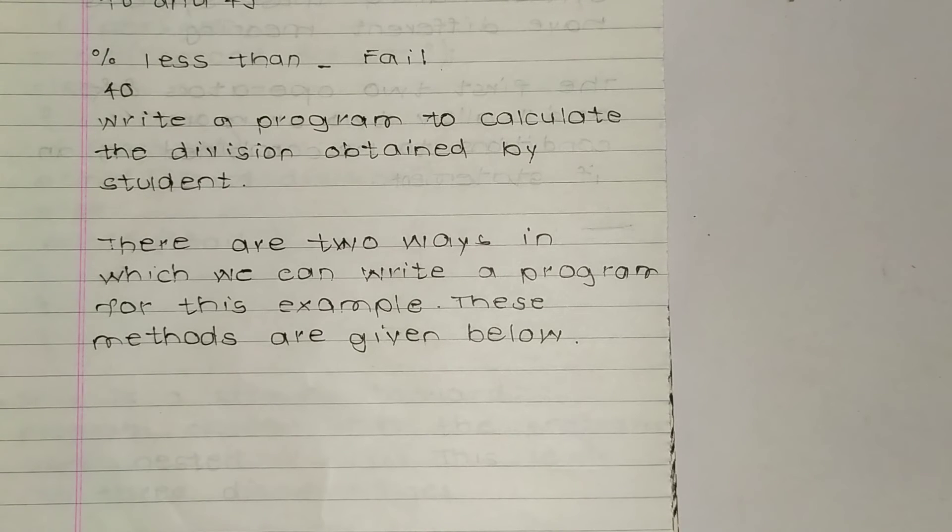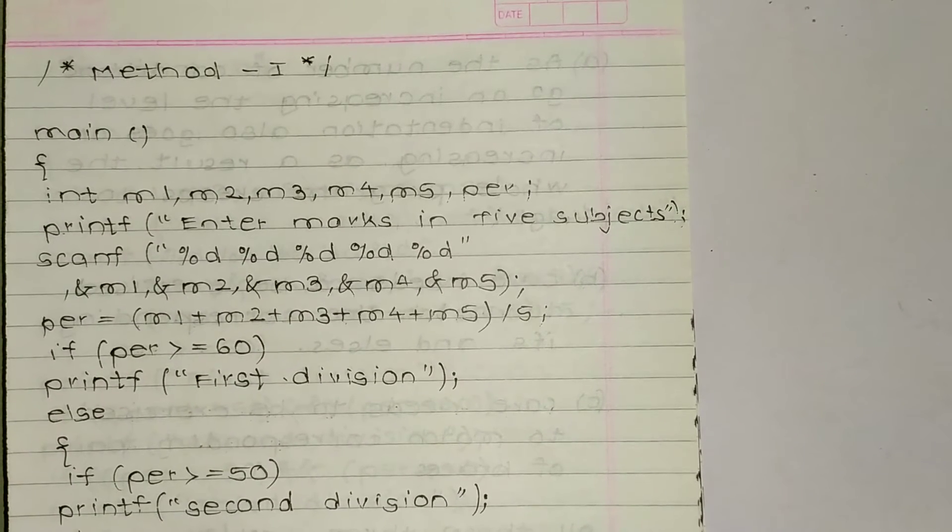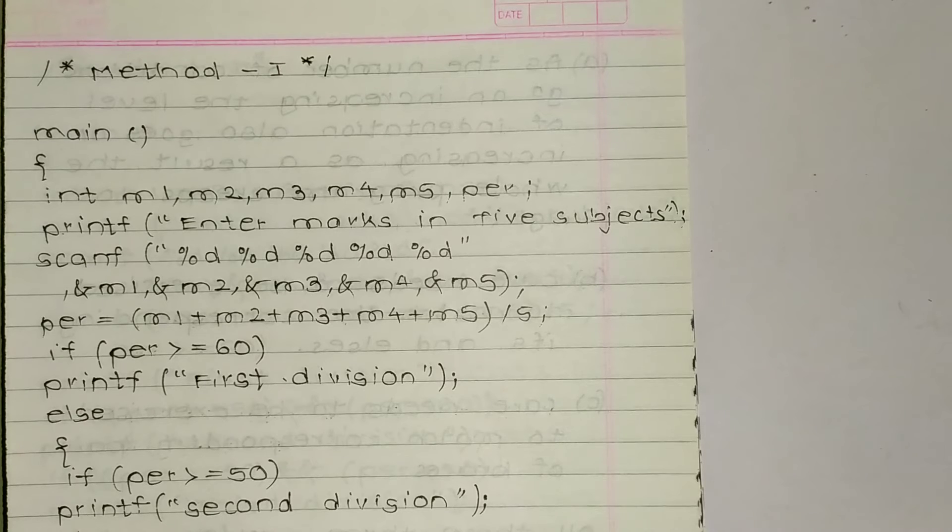First is method one. In first line main is written, so this main is compulsory function, then bracket is opening. Now int m1, m2, up to m5 and per, that is per is percentage. So m1 to m5 and per are integers. They are defined first. Then printf enter marks in five subjects, so we are telling user to enter marks of five subjects.